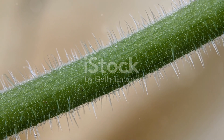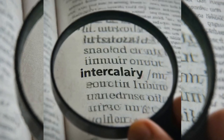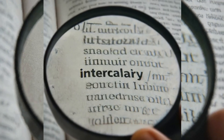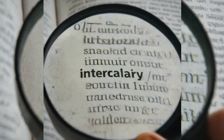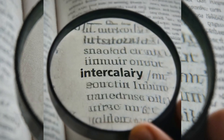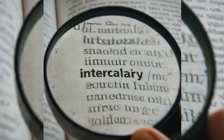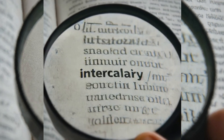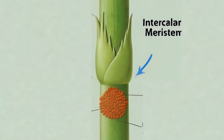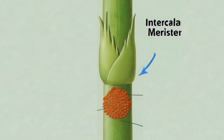Breaking it down a bit further, the term intercalary is derived from the Latin word intercalary, which means to insert. So in essence, this meristem inserts growth in the middle of the plant.